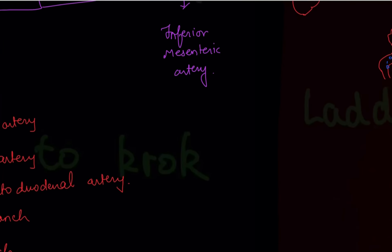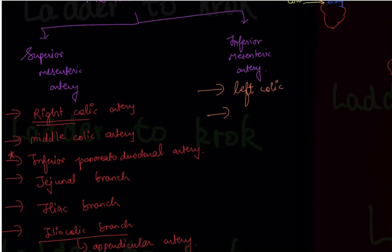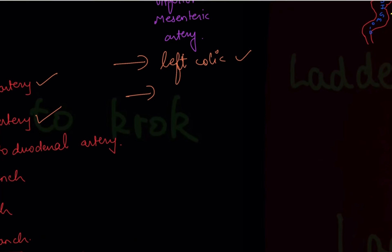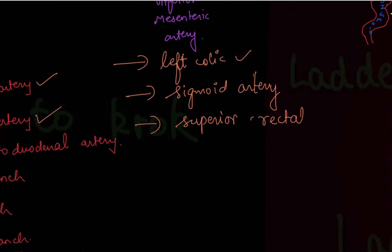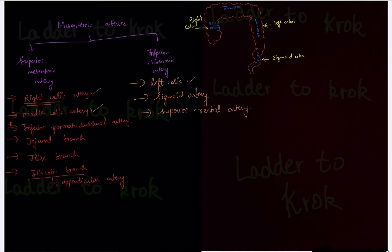The branches of the inferior mesenteric artery: first is the left colic artery, which supplies the descending colon. Next is the sigmoid artery for the sigmoid colon. And the last is the superior rectal artery. Please remember both the superior and inferior mesenteric artery branches.